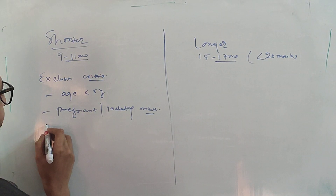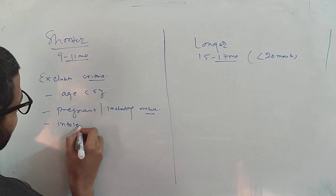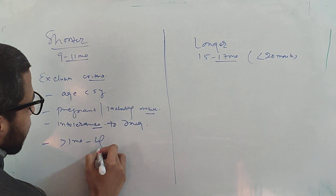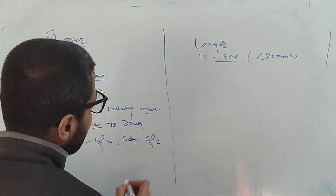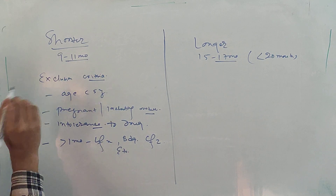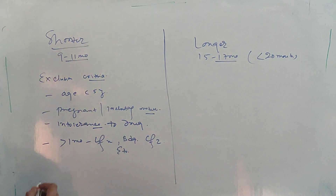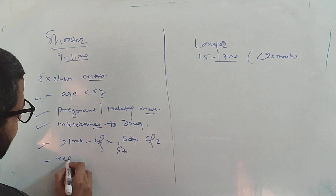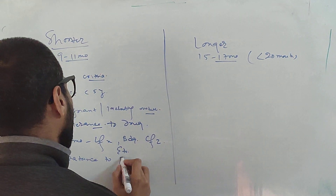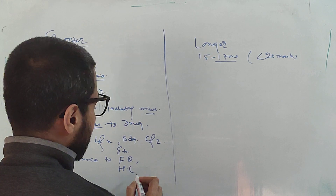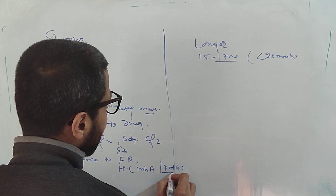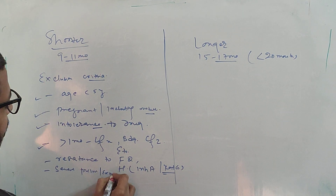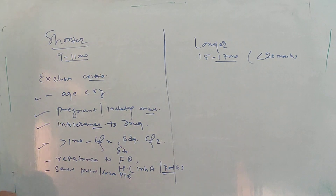Other exclusion criteria include: intolerance to any drug component, prior exposure to drugs like levofloxacin, bedaquilin, or ethionamide for more than one month, and resistance to fluoroquinolones or isoniazid. For isoniazid, there are two types of resistance — inhA resistance or katG resistance — and if both mutations are present, we don't give the shorter course regimen. Also, severe pulmonary tuberculosis or extra-pulmonary tuberculosis are exclusion criteria; we directly go for the longer course regimen.